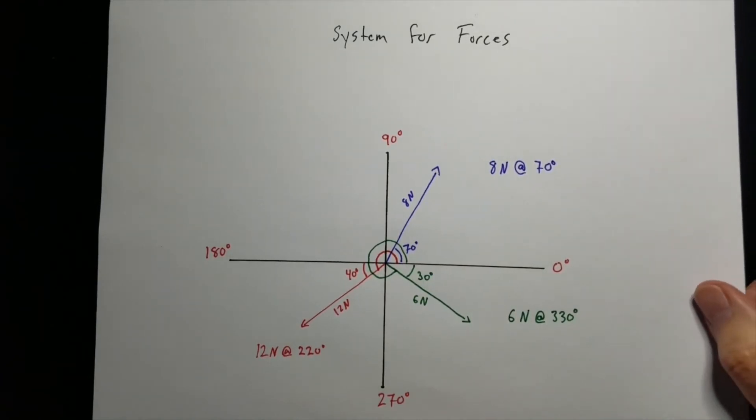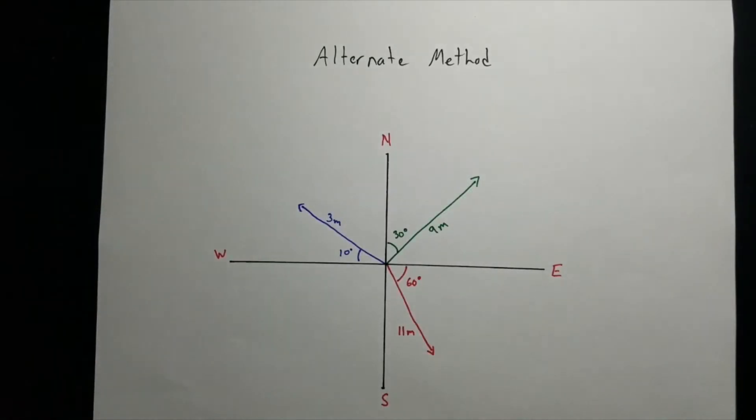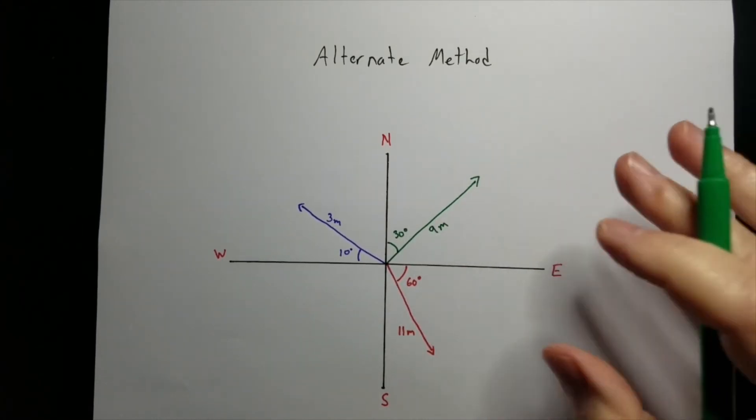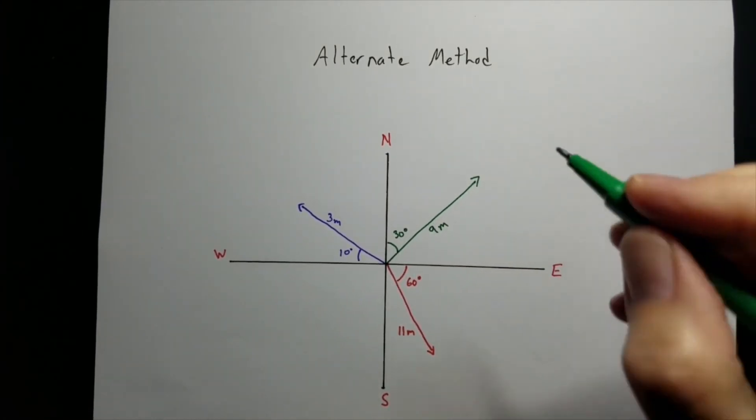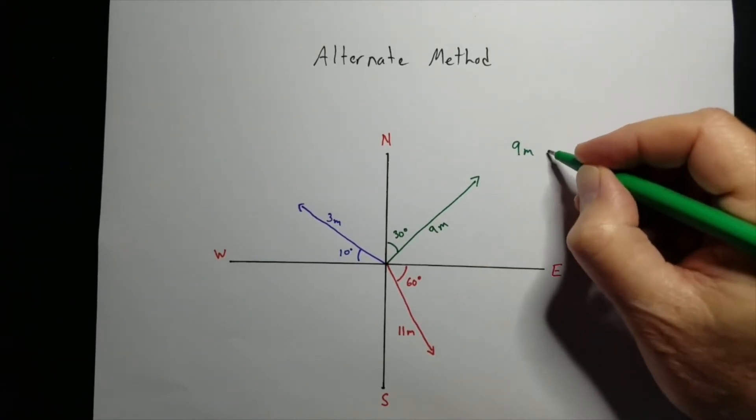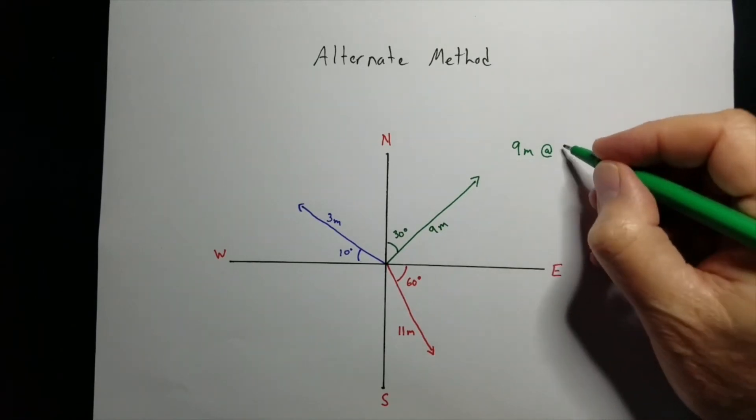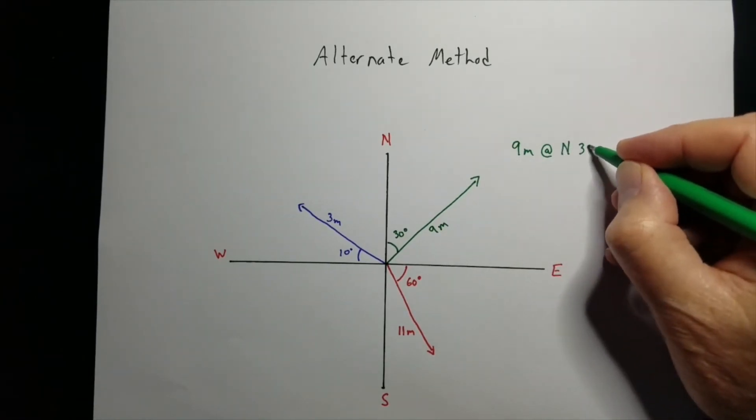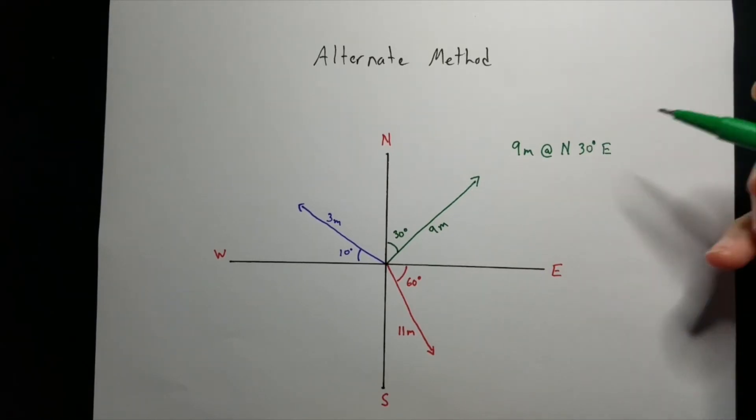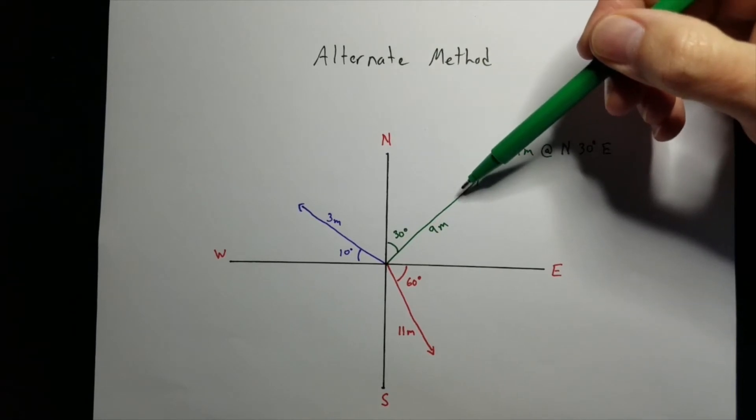Well, there's some alternate ways that we can name vectors. So here's one that I've seen that I don't really use that may be common for you is this one. Let's look at this green one. It looks very similar to that first system that I showed you except this. This will be named nine meters at north 30 degrees east. So you're going to go from the north line 30 degrees east to it.